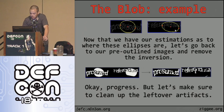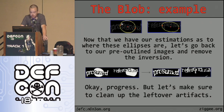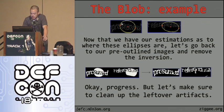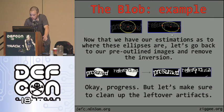You can see here where the ellipse was found using that algorithm. Now that we have our estimations of where the ellipses are, we'll go back to our pre-outlined images and remove the inversion. If anything lands on or inside the ellipse and it's white, set it black; if it's black, set it white. If it's outside the ellipse, ignore it. The result comes out like this — you can see there's a small leftover artifact because it didn't perfectly find the ellipse.